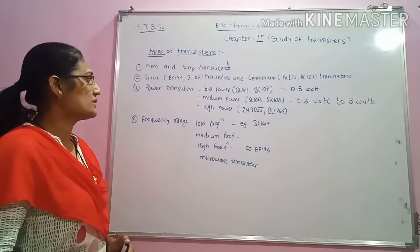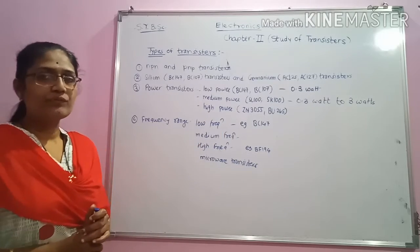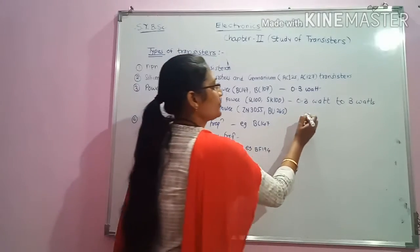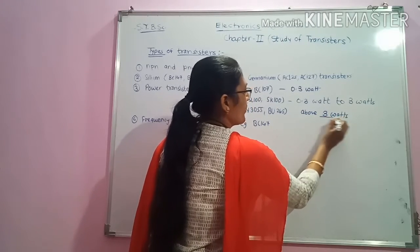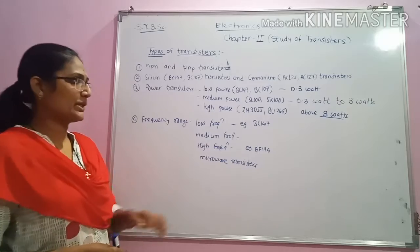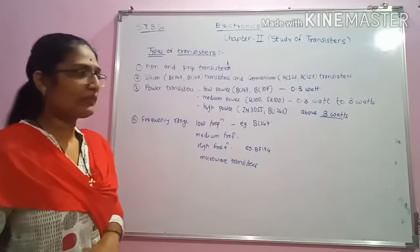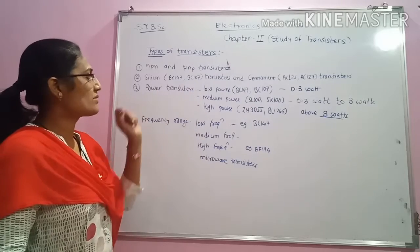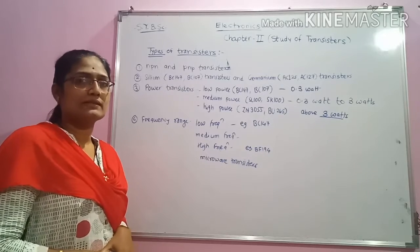The third type of transistors based on their power are the high power transistors. The power dissipated by these transistors is above 3 watts, and they are called high power transistors. Their examples are 2N3054 and BU265. Thus, we have seen the three types of power-based transistors: low power transistors, medium power transistors, and high power transistors.